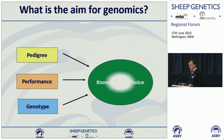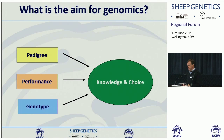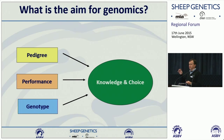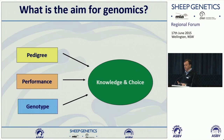The aim for genomics is that we can simultaneously use pedigree information, performance measurements, and genotypes seamlessly to make informed decisions. When DNA information first started getting used in the cattle industry in the US, sale catalogues had breeding values plus four, five, or six separate DNA tests listed. By having all these things integrated into one set of breeding values, you've only got that one set of figures to help make decisions.